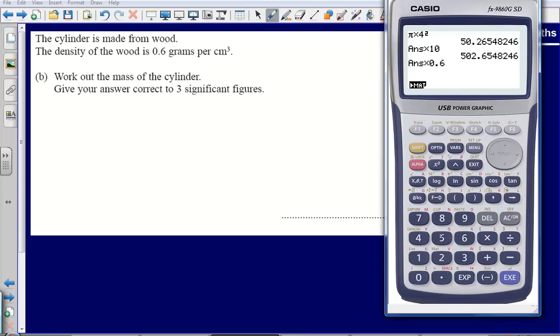For this question, don't be tempted to do 503 times 0.6, because that's going to give us a slightly different answer. We want to use our exact answer to the question we answered earlier, not the answer that we rounded.